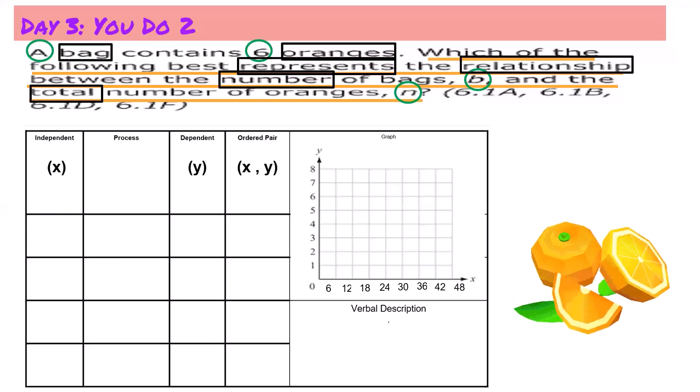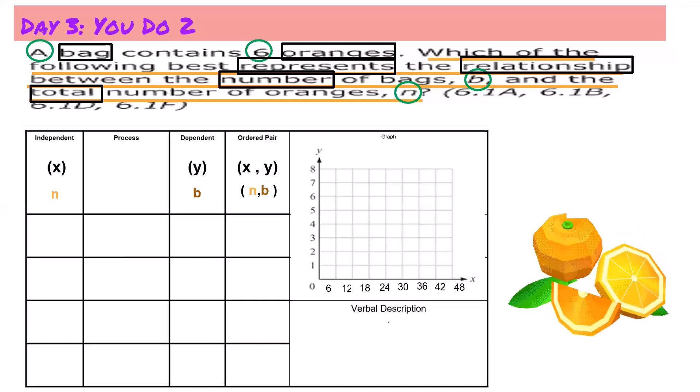So I will label my independent variable as n for the number of oranges. My dependent variable will be labeled as b for the number of bags, and I will plug these variables into my x y ordered pair.